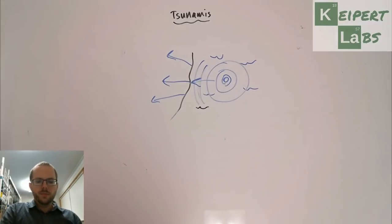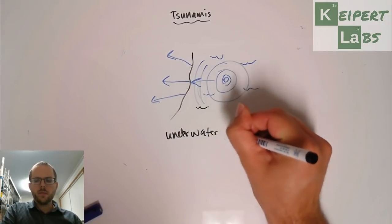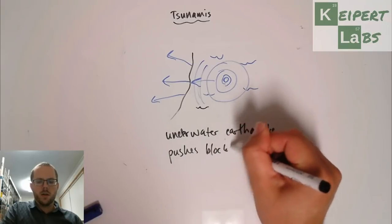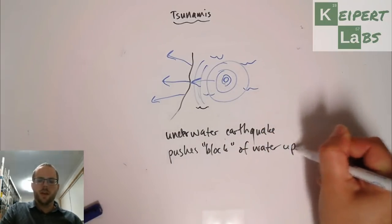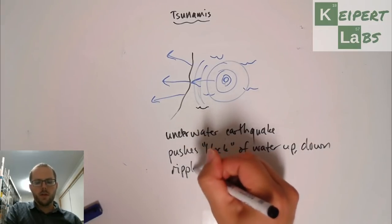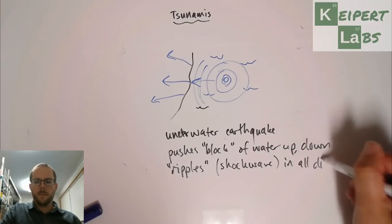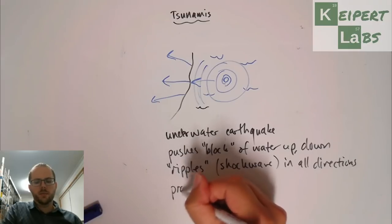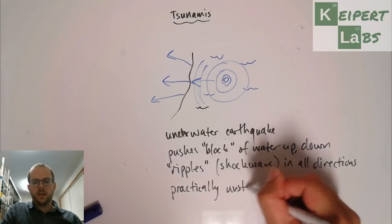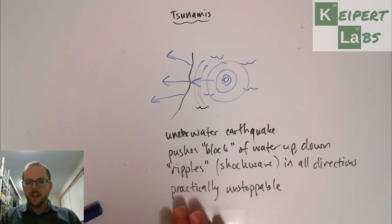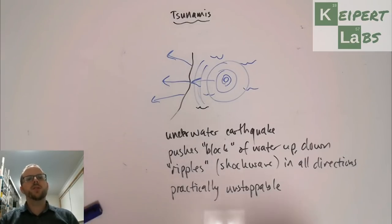It comes from an underwater earthquake. To recap: an underwater earthquake pushes a block of water up, which then comes back down, so we get ripples — but it's actually more like a shockwave from a massive explosion that travels in all directions and is practically unstoppable. It's not like a breaking wave at the beach that you can ride or outrun. With a sufficiently large tsunami close to where the earthquake has happened, there's very little you can do aside from get to high enough ground.